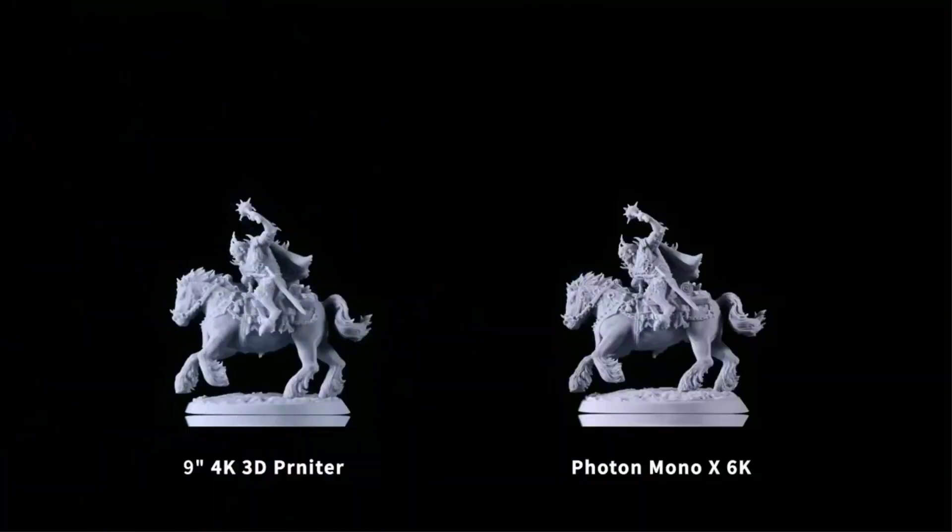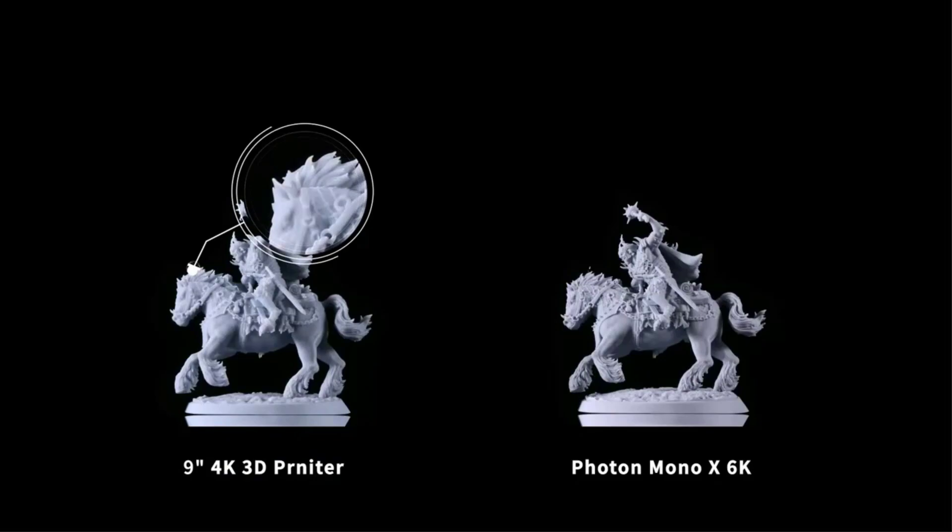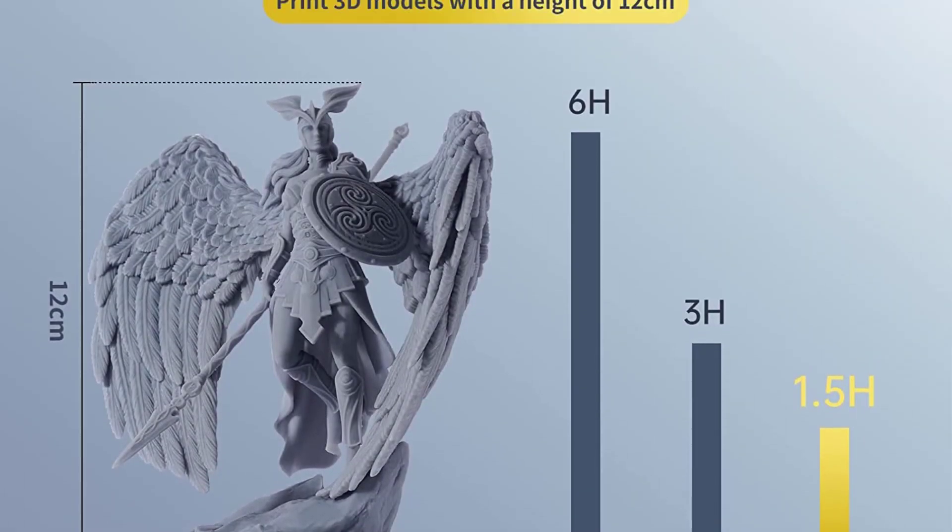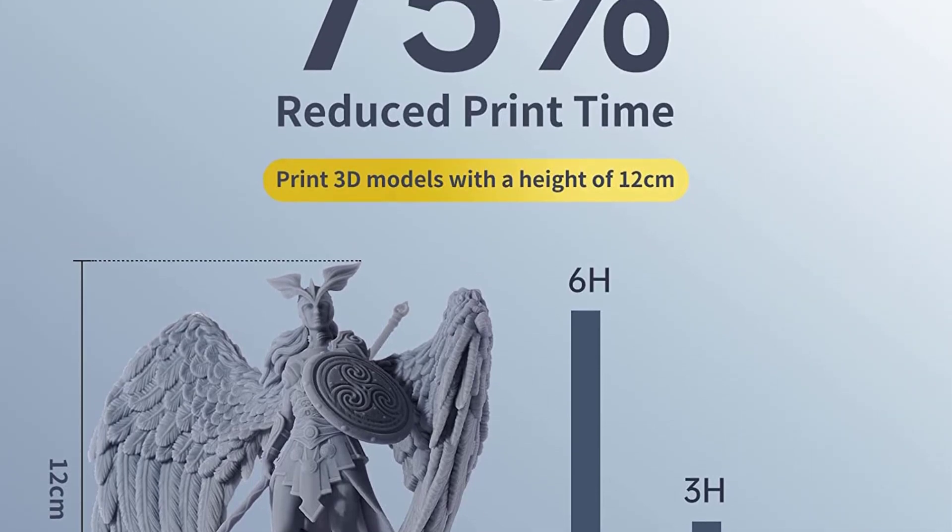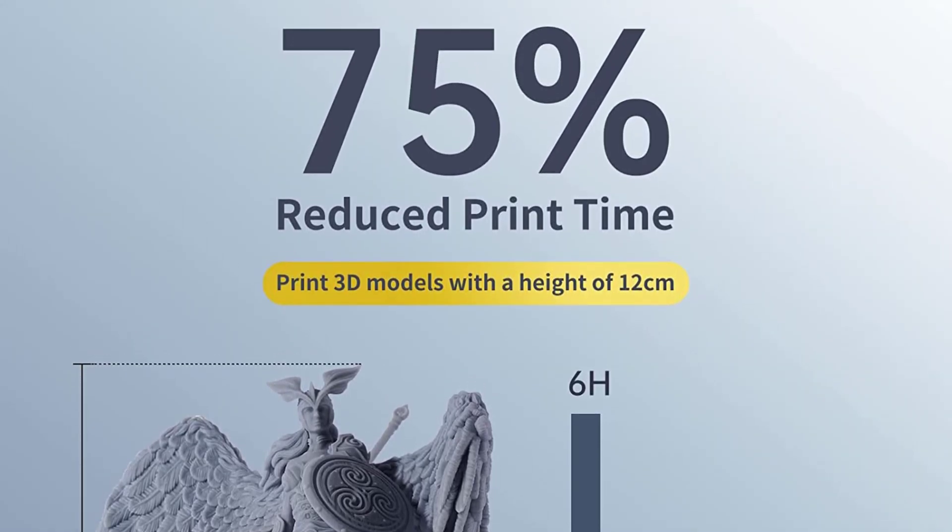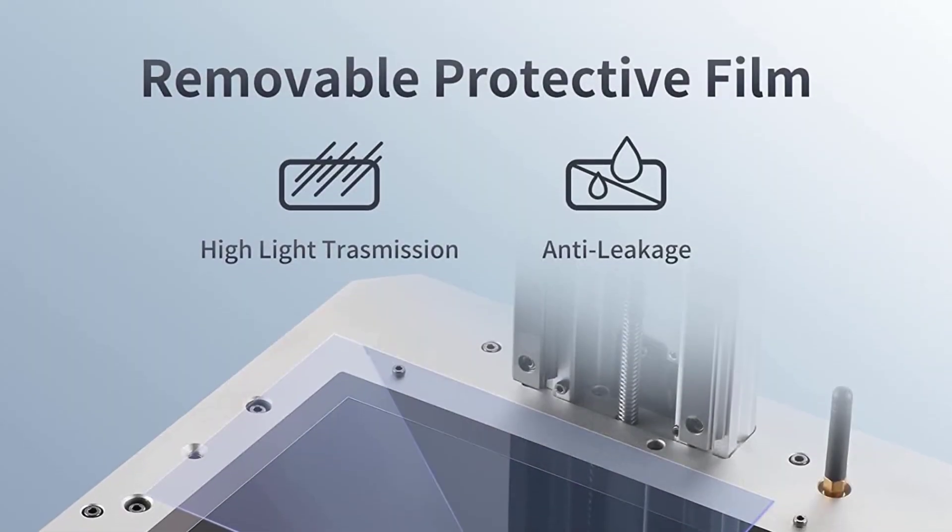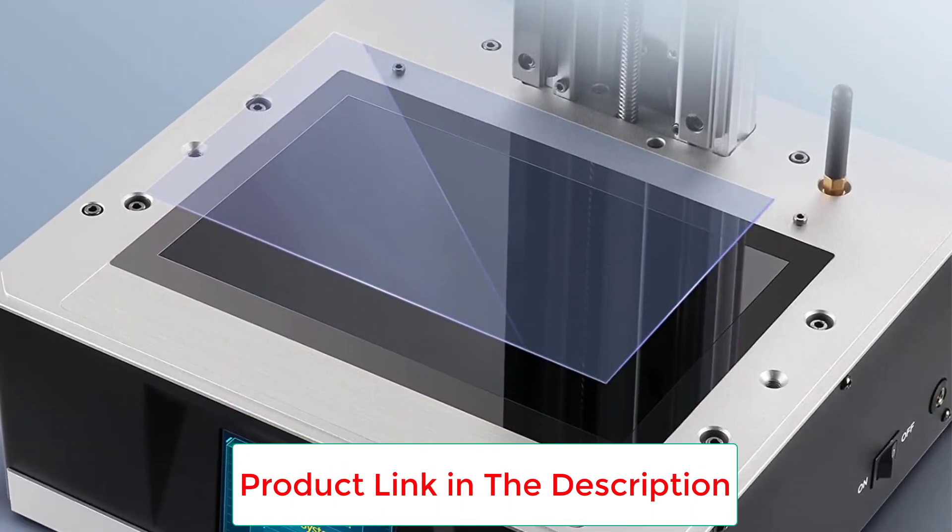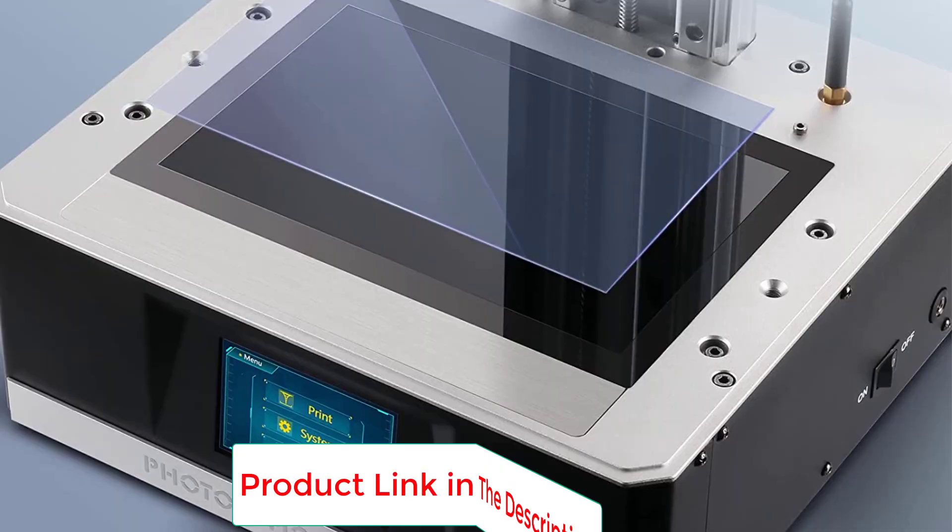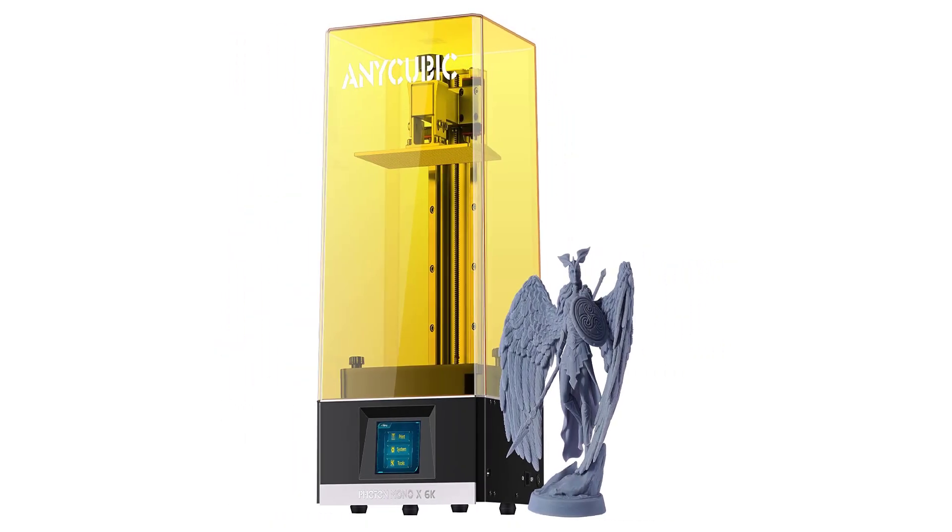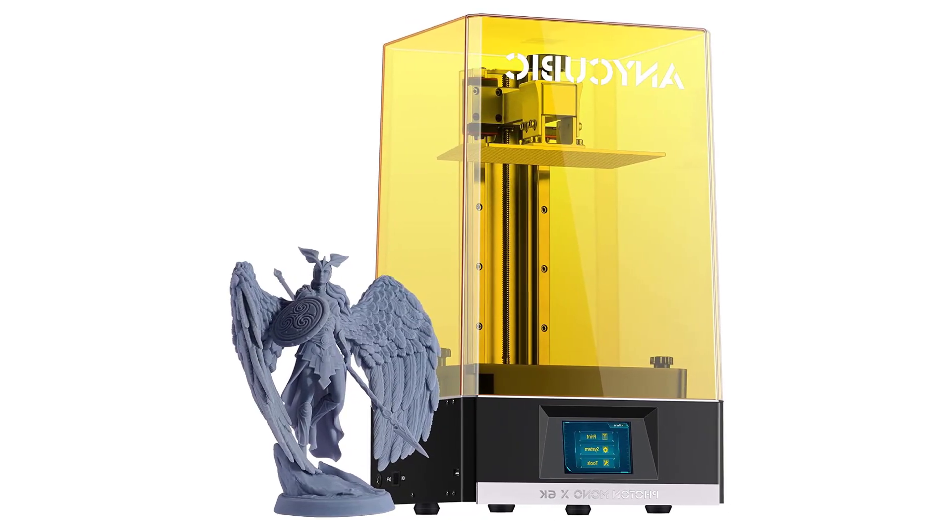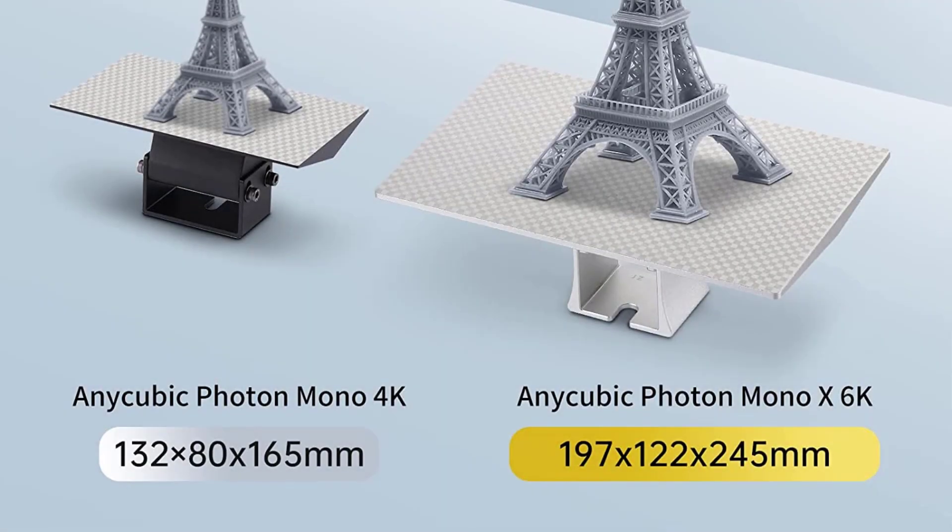The Photon Mono X 6K LCD screen has a high resolution of 5760 by 3600px and a contrast ratio of over 350, which can fully express the details of the character model's hair, fingers, and so on. 40 bright LED lights arranged in a matrix provide intense and uniform exposure in each layer of print, improving print quality and accuracy.